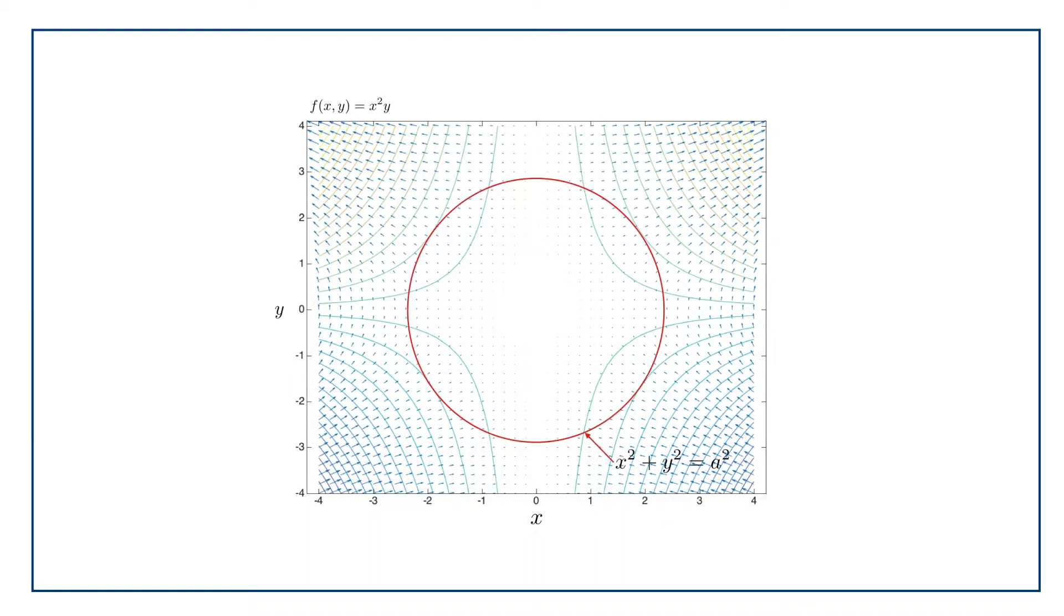Now what happens if I want the maximum value for this function, f equals x squared y, but constrain it to lie on a circle? Where's the highest point anywhere on that circle? Say I have a circle of radius a squared, and I want to find the minimum maxima on that path as I go around that circle.